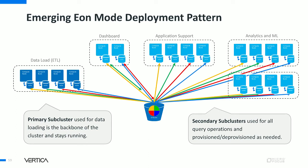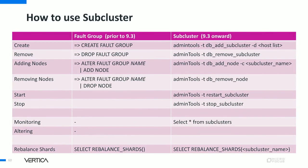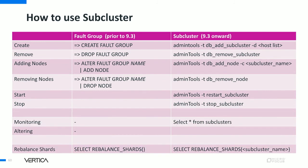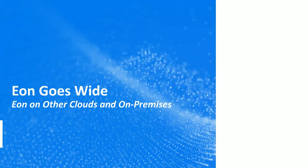That summarizes the highlights for improvements delivered as of 10.0. The emerging Eon deployment pattern is: a primary subcluster that handles data loading, ETL jobs, and Tuple Mover jobs — the backbone of the database, kept running all the time — while defining different secondary subclusters for different workloads, provisioning them when workload arrives and deprovisioning them when done to save operational cost. Here are some admin tools commands you can start using, and check out the Eon subcluster documentation for more details. Back to Dave to talk about the Eon footprint.